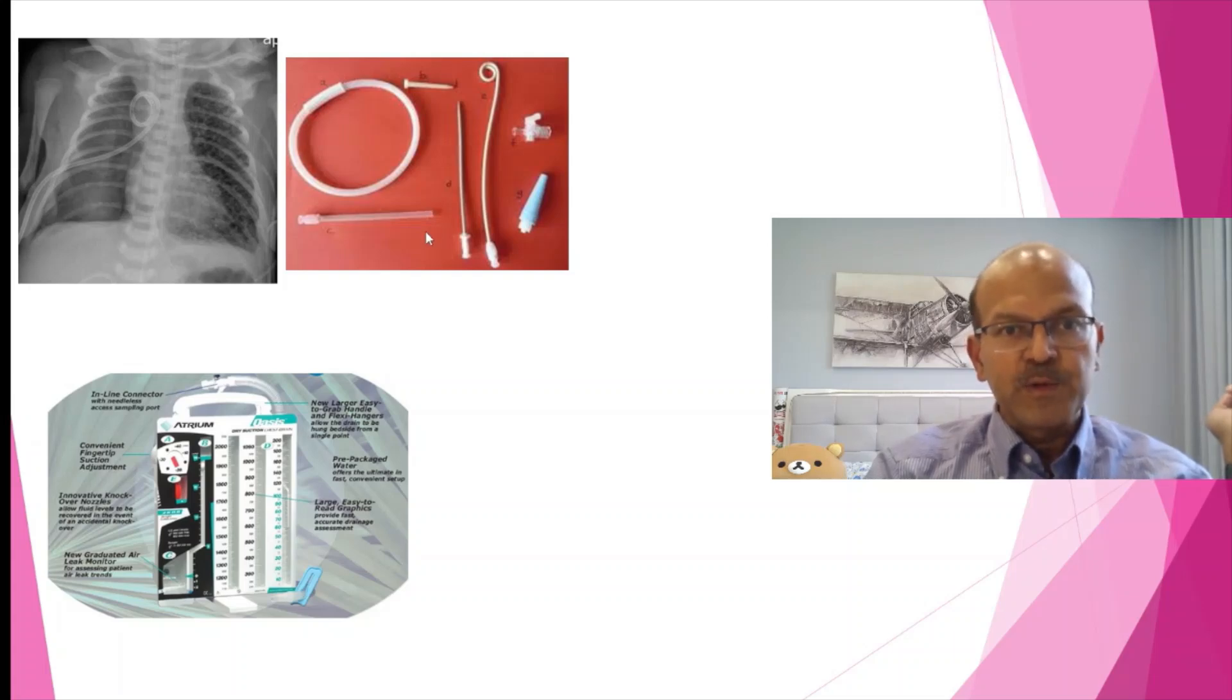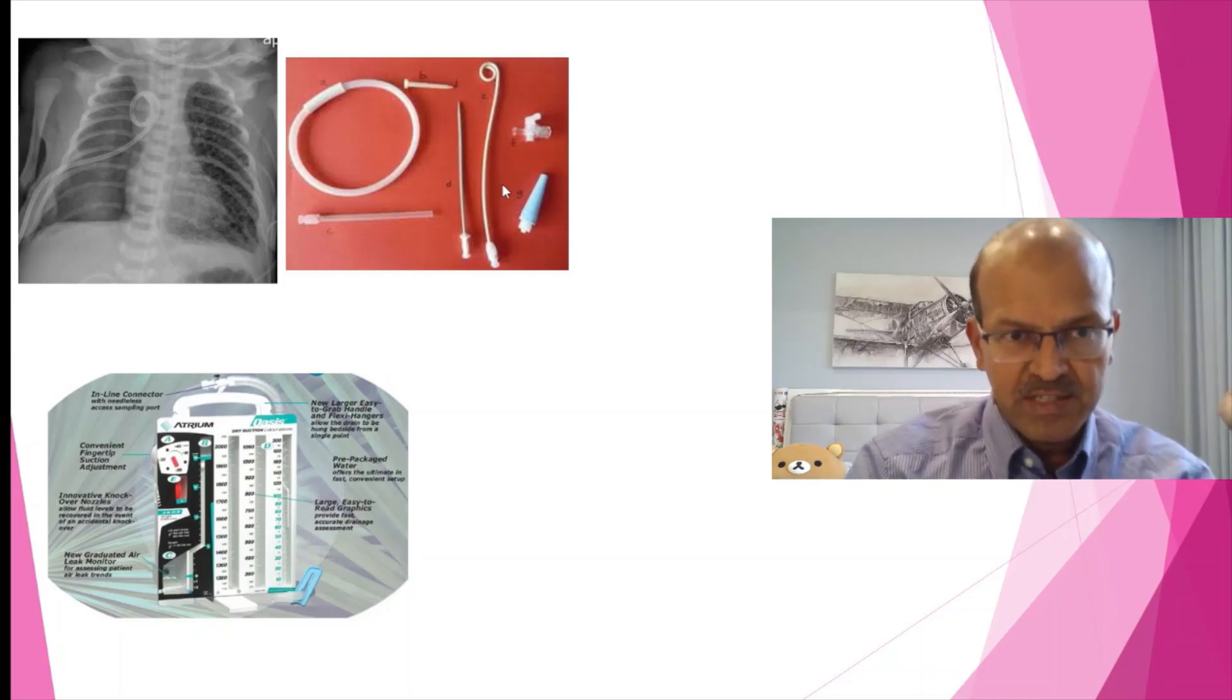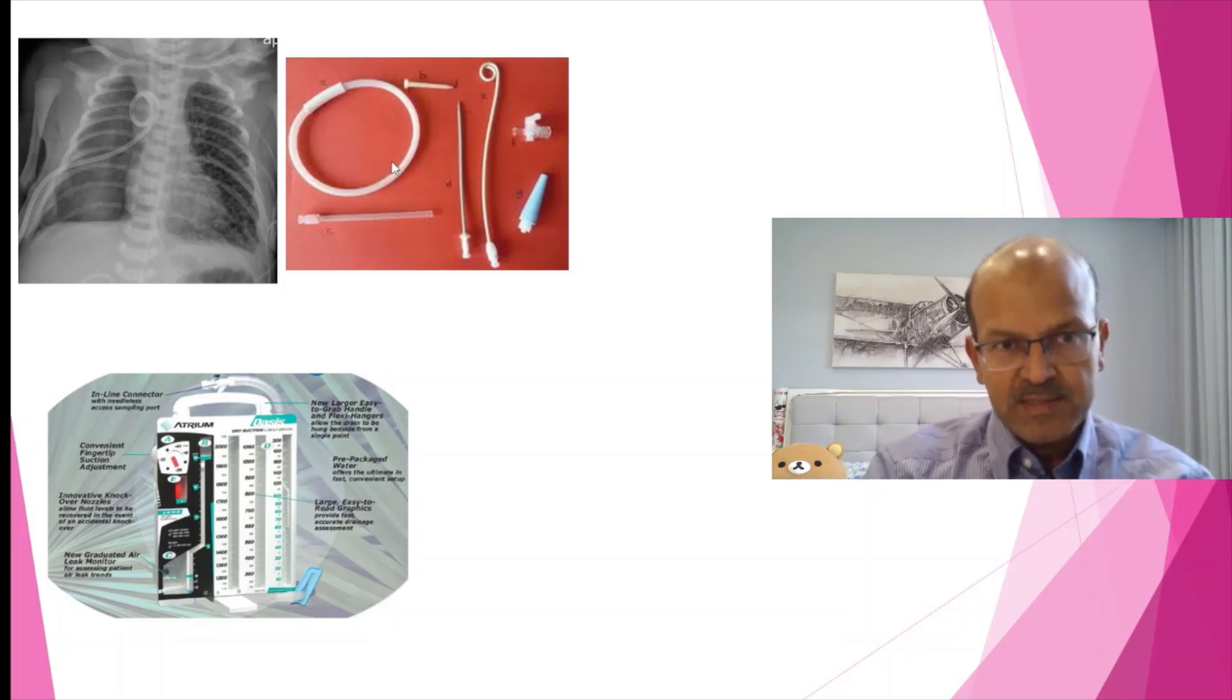The pigtail catheter uses the Seldinger approach. You have a very soft catheter, you have the guide wire which goes through that. First you make a small nick on the skin, then you insert the dilator, and then over the dilator, the guide wire is threaded in, and through the guide wire, the pigtail catheter is threaded in. It looks complicated but once you start doing it a couple of times, it is straightforward. The only precaution you have to take is the guide wire is springy and coily, so make sure it doesn't contaminate the sterile field the way you hold it. It is better to have an assistant with you.